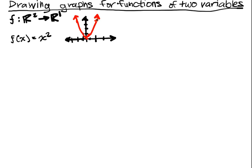You draw the axes, plot some points, and fill it in. These points are like the skeleton of the function — a zero-skeleton — because they are zero-dimensional pieces of information.